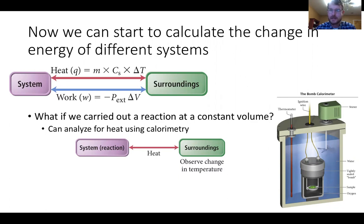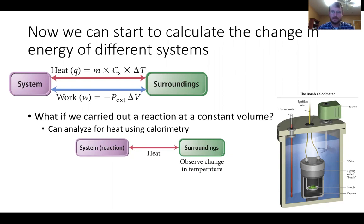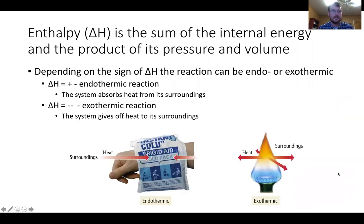The bomb calorimeter is actually how we determine the calories in food. A sample is ignited inside the calorimeter, and the change in temperature is measured. Using the heat calculations, we can determine how much heat — how many calories — is in the system. Next time, in part three, we're going to start talking about enthalpy.